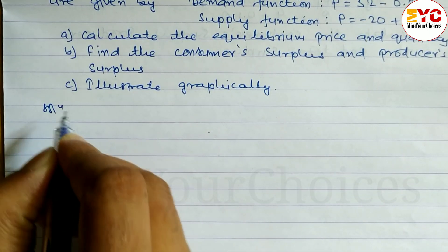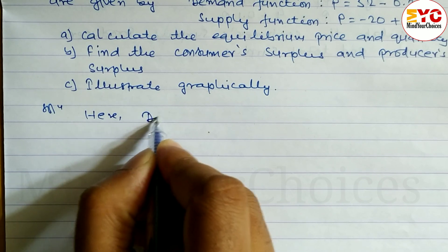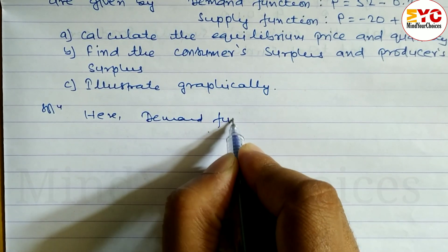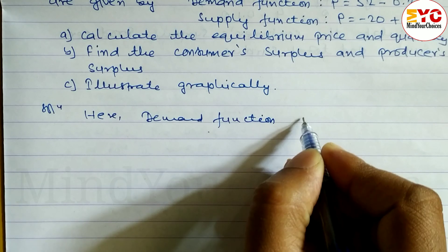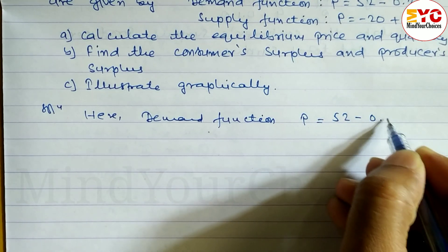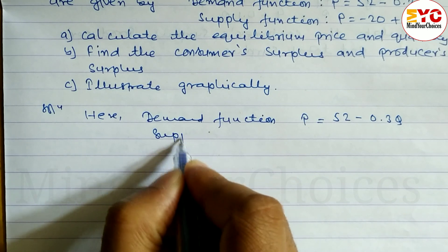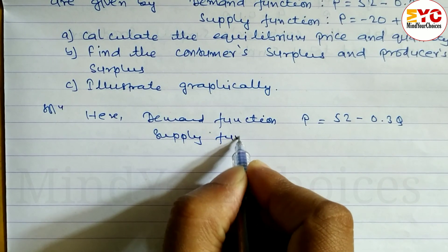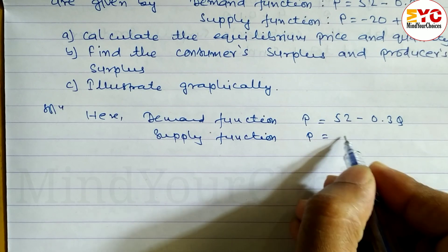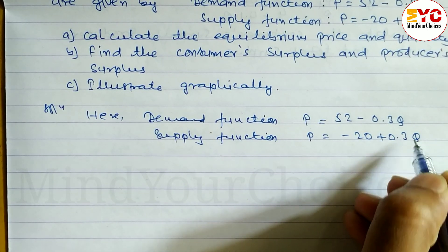Solution. Here, the demand function is P = 52 minus 0.3Q. Similarly, the supply function is P = minus 20 plus 0.3Q.